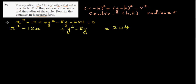For completing the square, we take half of the coefficient and then square it. Half of negative 12 is negative 6, and the square of negative 6 is positive 36. So we add plus 36 to both sides in the x gap.